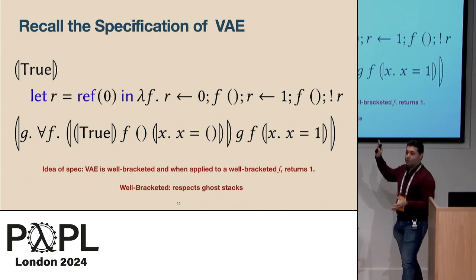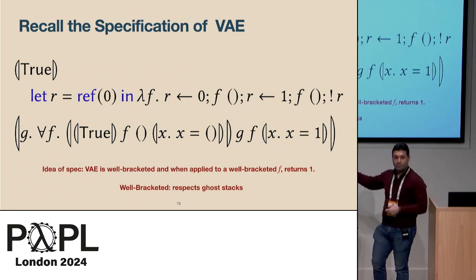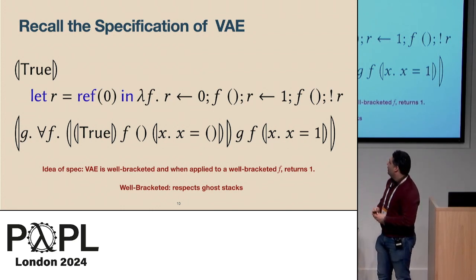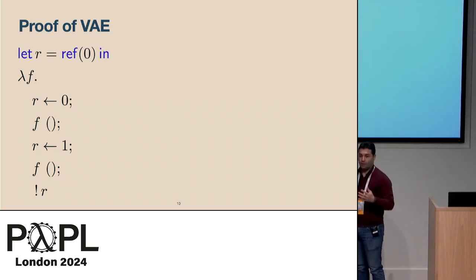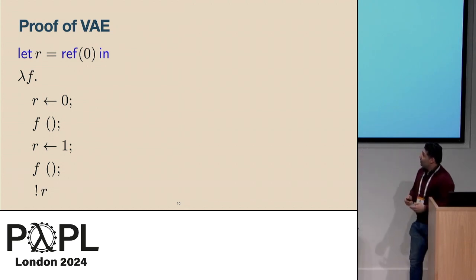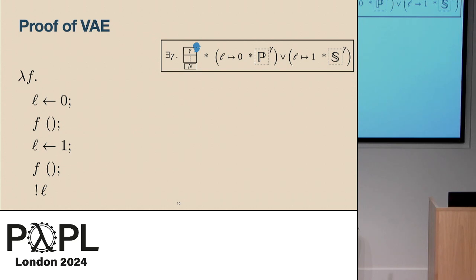Recall the specification: the closure we return, when applied to a well-bracketed function f, will always return 1. Here, well-bracketed means it respects the stacks. Let me show a high-level idea of the proof for this example. We start by allocating the reference, getting a location L in memory with initial value 0. At this point we can establish an invariant: we have this ghost resource, and the ghost resource on top of the stack determines the value of the reference. If the ghost resource is in the pending state, the value of the reference is 0; if the ghost state is in the shot state, the value is 1. This invariant is preserved throughout the proof.